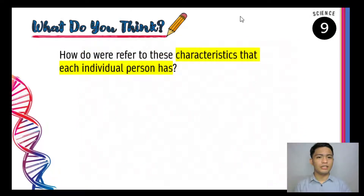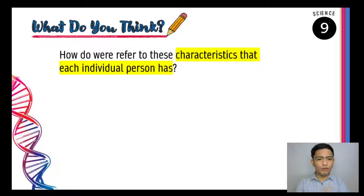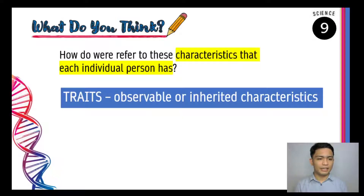The question is, how do we refer to these characteristics that each individual person has? What do we call those qualities? If you answered with the word starting with the letter T — traits — then you are actually correct. Traits are observable or inherited characteristics of a person.